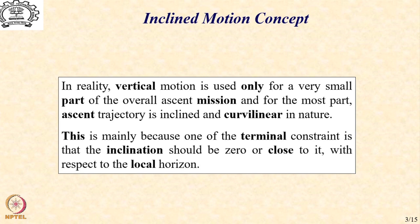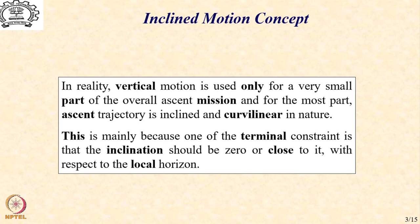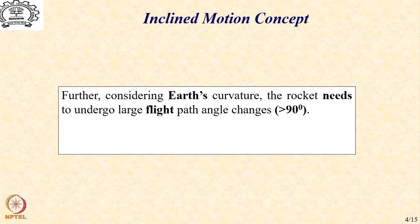It is worth noting that this is mainly due to one of the terminal constraints imposed by the spacecraft mission — that the inclination with respect to the local horizon requires that a vehicle moving along a radial line should, by the time it completes the mission, be moving along a local tangent. Obviously, this is going to require a large amount of curvature while completing the ascent mission.